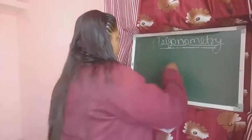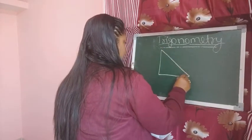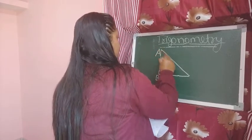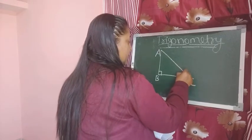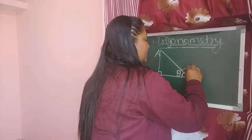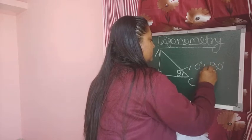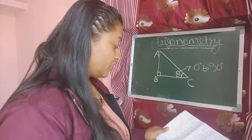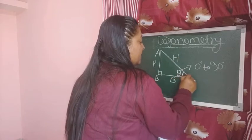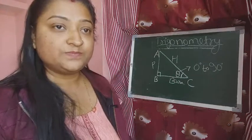Now we draw a right angle triangle. Here it is a right angle at angle B, and this is an acute angle — we denote it by theta. Acute angle means an angle between 0 degrees to 90 degrees. And this is your perpendicular, this is your hypotenuse, and this is your base adjacent to angle theta.